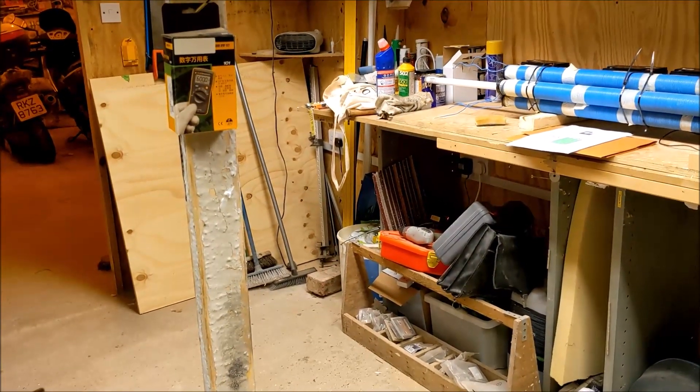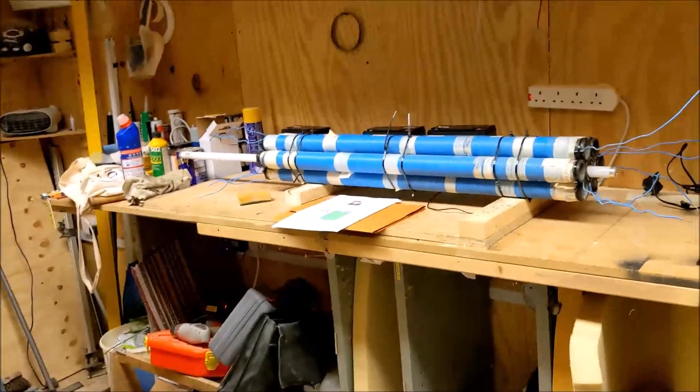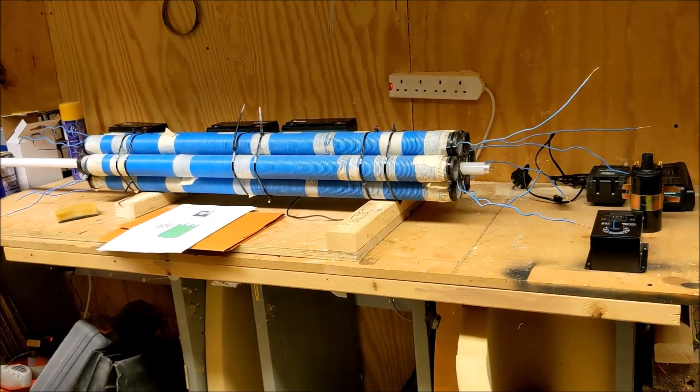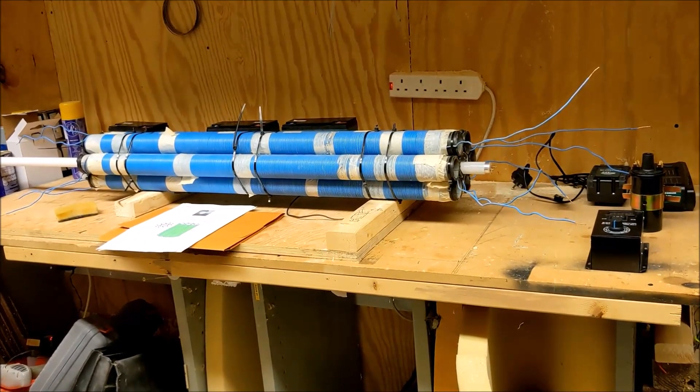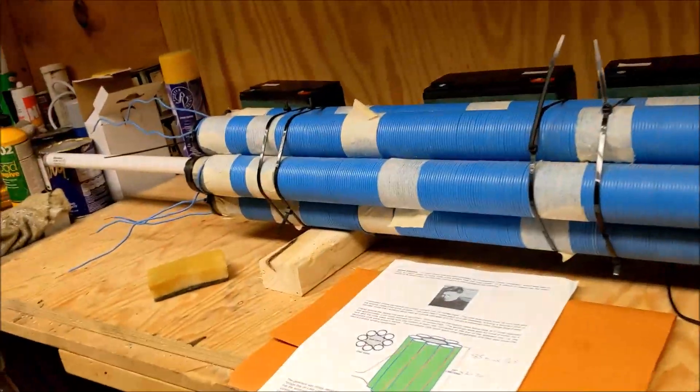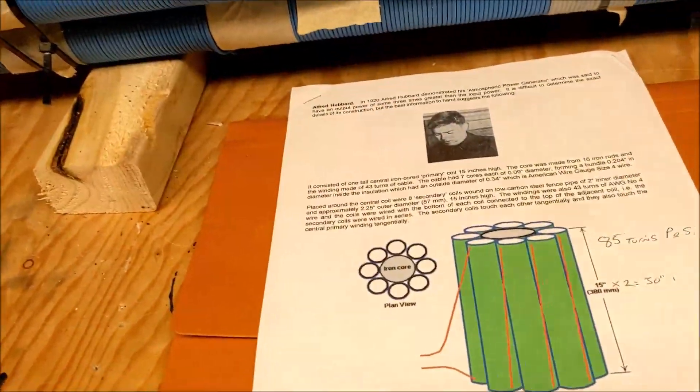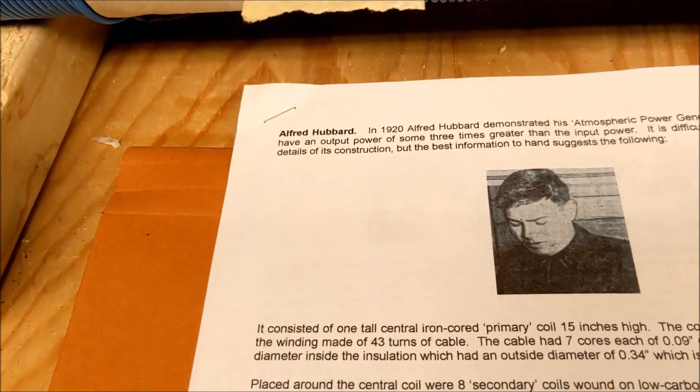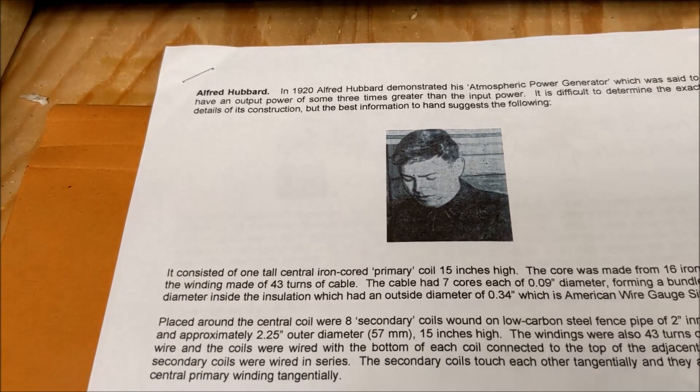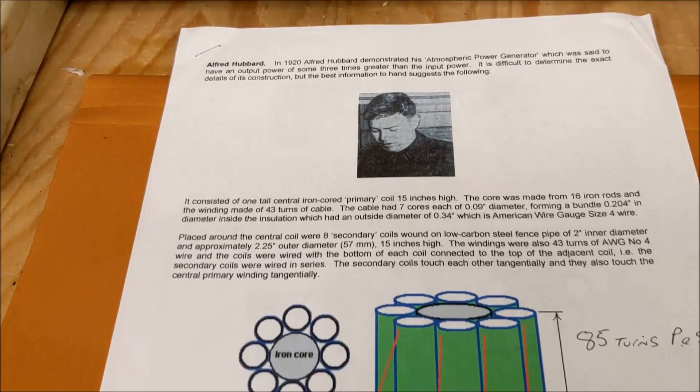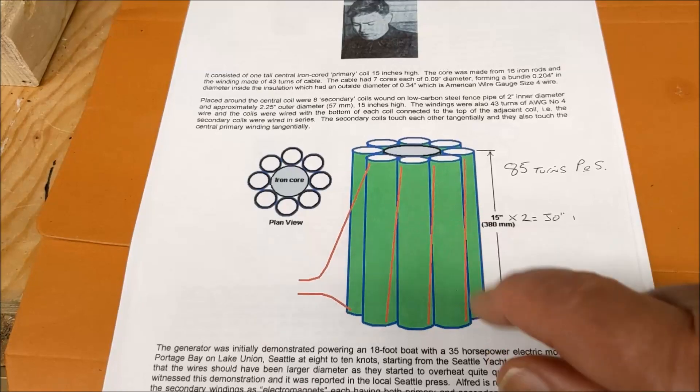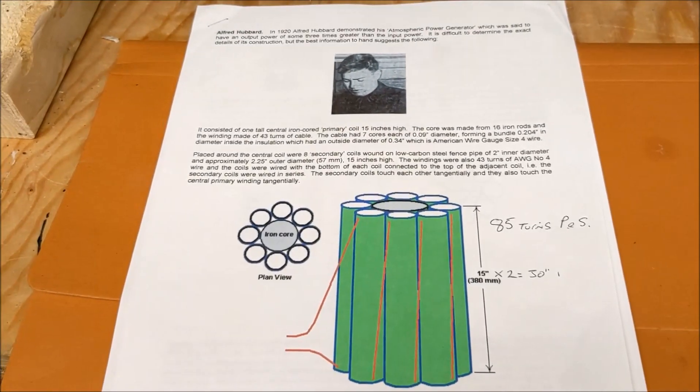It's about getting electrical potential from the ether. I've come to find out that what I'm doing is very similar to Alfred Hubbard. Alfred Hubbard in the 1900s made a generator, and lo and behold, look at this - a generator very similar to mine. When I look at it, I'm thinking maybe I'm on the right track with this contraption I've got here.